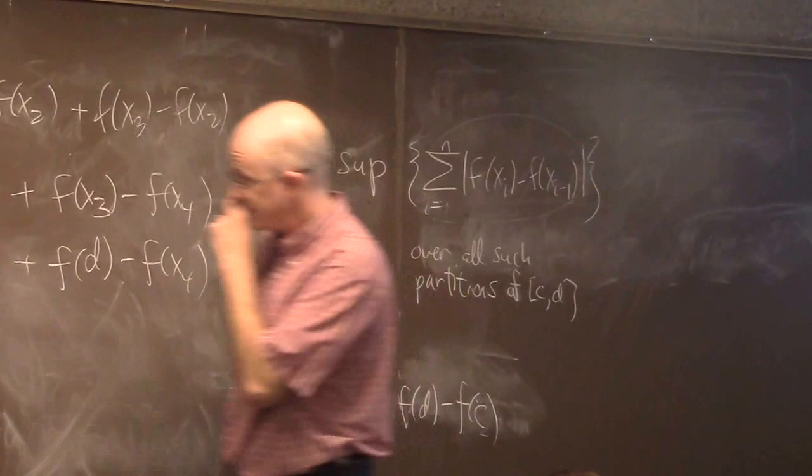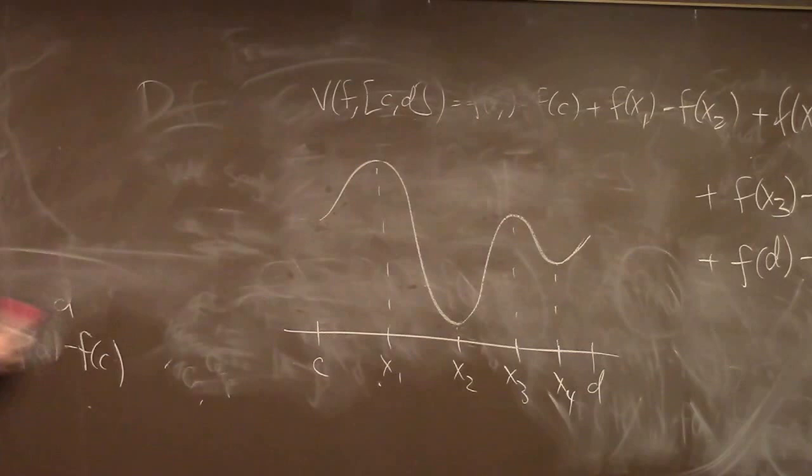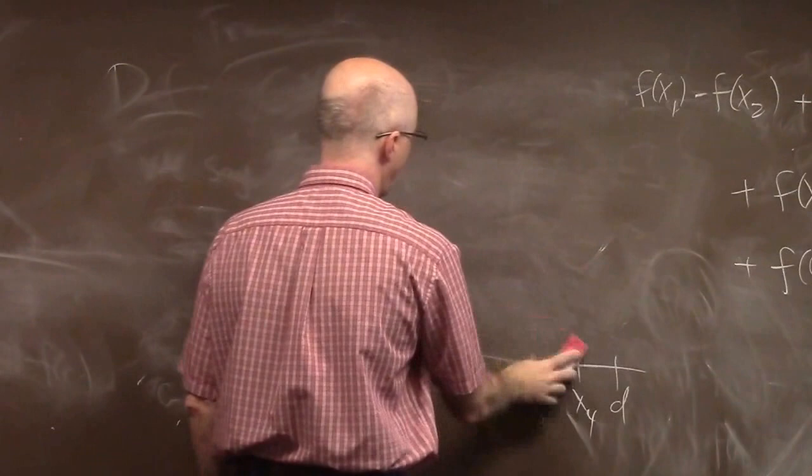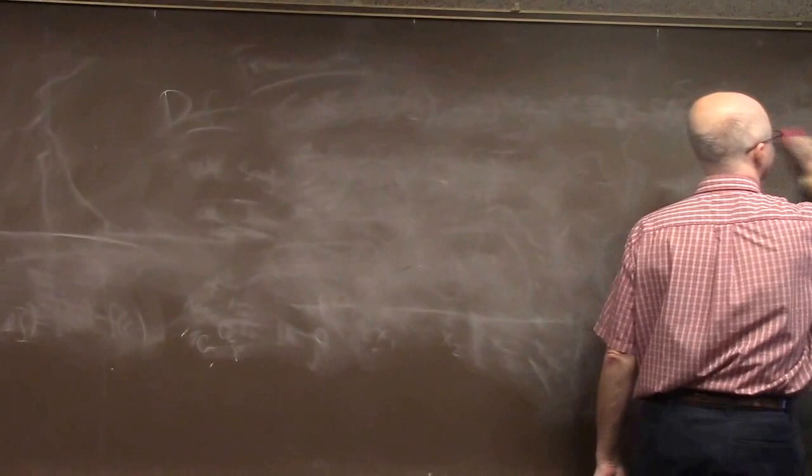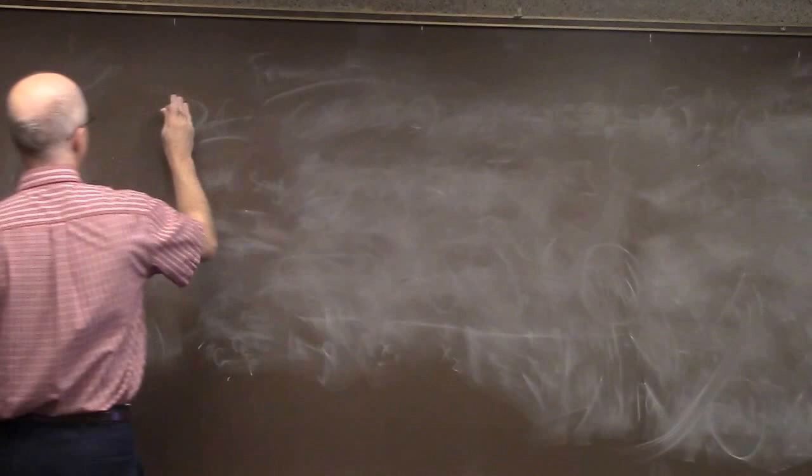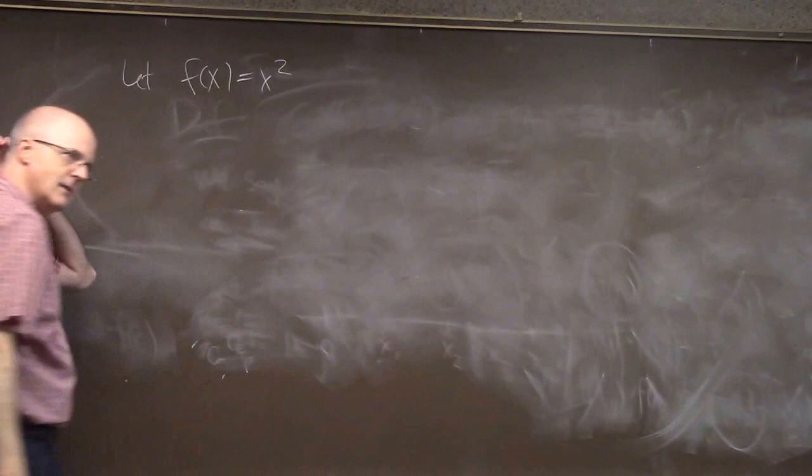All right, to finish class today, we're going to start Chapter 4 on derivatives. Let's do a basic derivative calculation, like you'd get in Calc 1, even. Except I want to do it in two ways, to show you that both ways give you the same answer. Let's keep it pretty simple. Let's let f of x equal x squared.